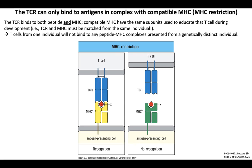In the case where MHC alleles are not matched, the TCR cannot recognize peptide MHC even if the peptide is the same. Here, the antigen-presenting cell expresses a green MHC molecule encoded by a different allele — MHC B — which has different binding residues that fail to interact with the TCR even though they still bind to the same red peptide X. T cells from one individual will not bind to any peptide MHC complexes presented by a genetically distinct individual. We refer to this as MHC restriction because the particular MHC molecule restricts the ability of a T cell to recognize foreign antigens.